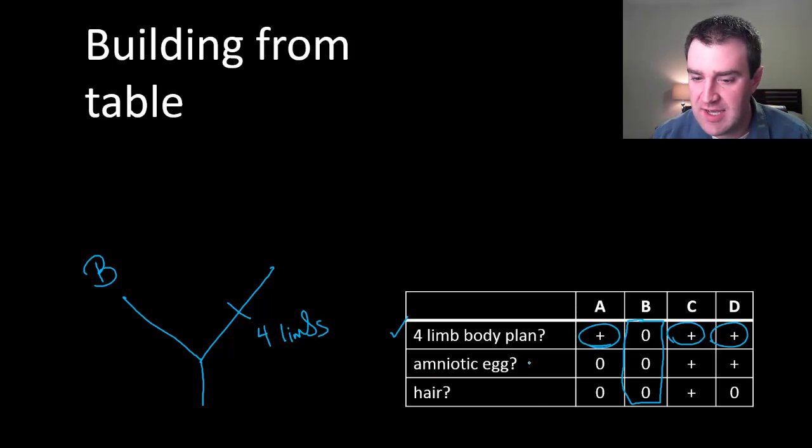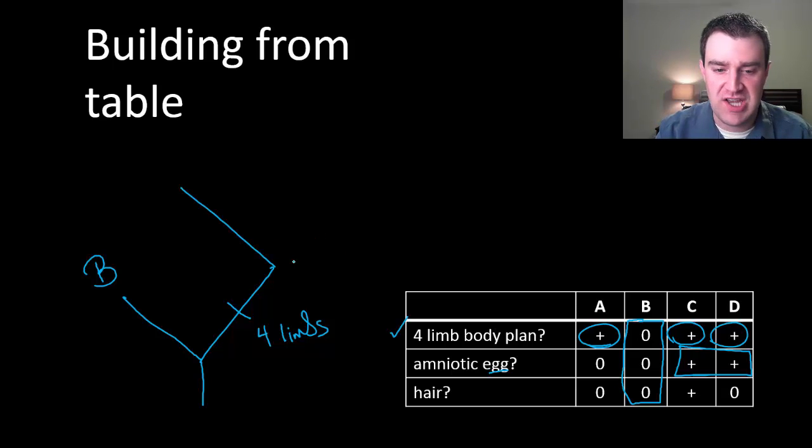Then we could look for the next trait. It looks like C and D have this next trait, eggs, but A does not. So maybe we want to show a branch again. Maybe on one branch show A, the species who doesn't have the trait, and then C and D will eventually come over on this branch.